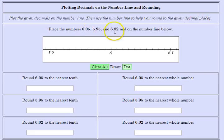So we're given three numbers and it's always a good idea to start by looking at your scaling. By that I mean what numbers are labeled and what are the increments between the labeled numbers as well.